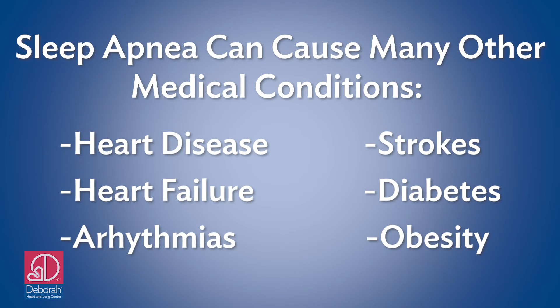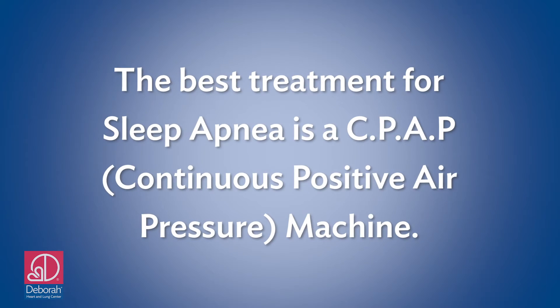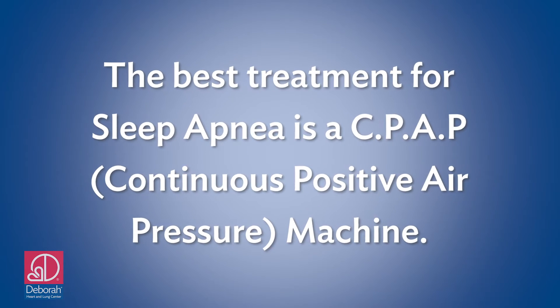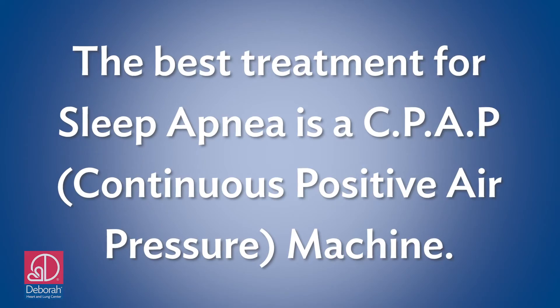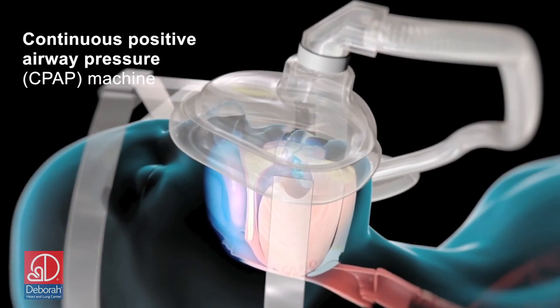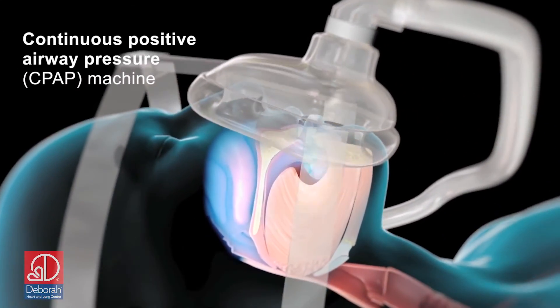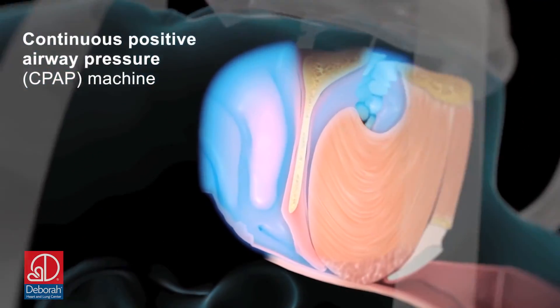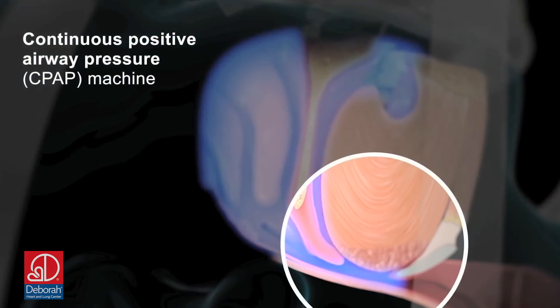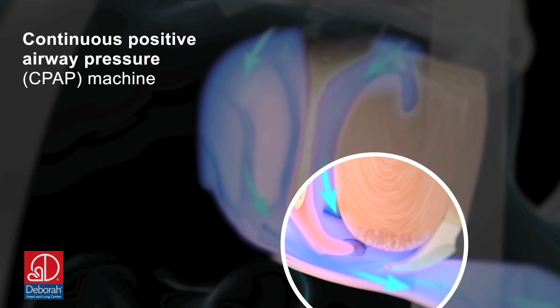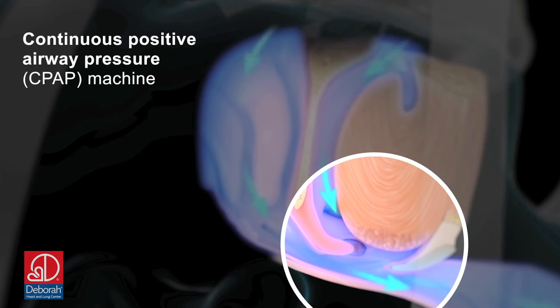CPAP stands for continuous positive air pressure. What it does is blow air into the windpipe so it doesn't collapse — it kind of splints the airway open, and that's what treats the hypopneas, apneas, or the narrowing of the airway.